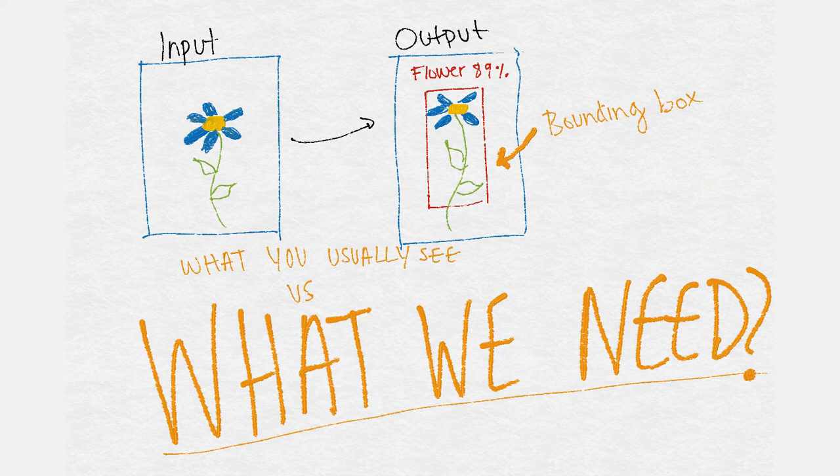What you usually see in image recognition is, for example, as I spoke about previously, an input image of a flower. So just this random flower, blue petals, the yellow center, green leaves. Pretty generic, okay?